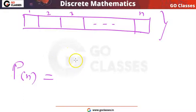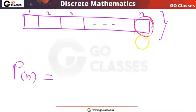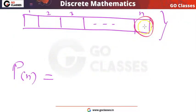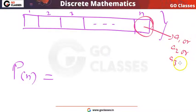You can notice that the last element can be a1, or it can be a2, or it can be an — it can be any of these elements. So for the last position, I have total n choices.